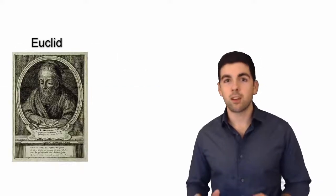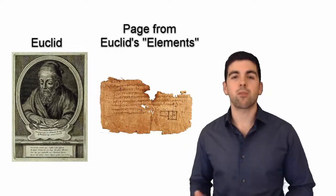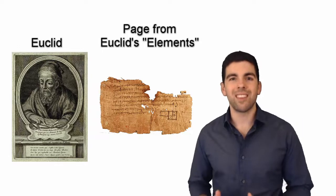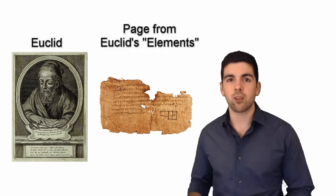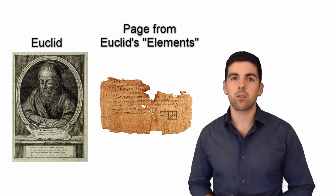Now in 300 BC there lived a man named Euclid. Some of you might know of Euclid because he is considered the father of geometry. He was the first person to compile all of the ancient Greek knowledge on geometry. But today we're going to talk about a slightly different problem that Euclid was looking at.